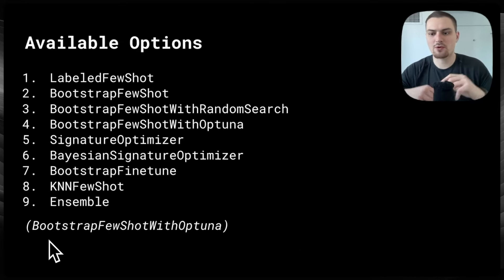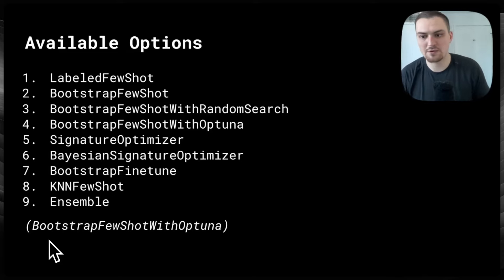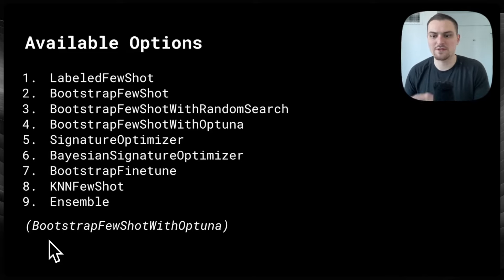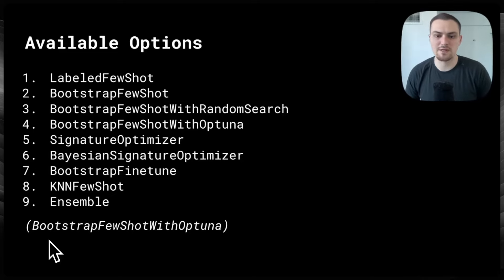At the time of recording, there are nine available optimizers in DSPy. Labeled FewShot means you have examples of inputs and outputs in your dataset that you curated, and you want to use those input-outputs in the prompt. Bootstrap FewShot means you only have inputs.